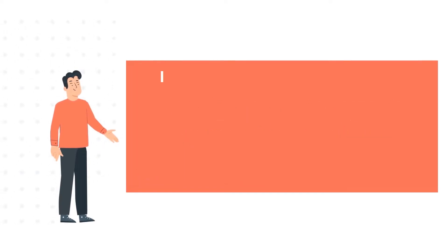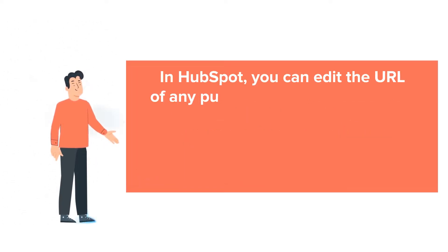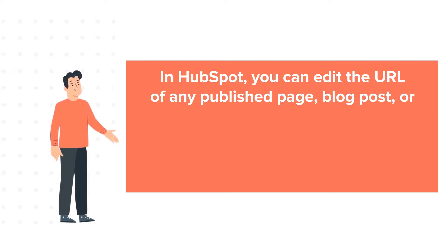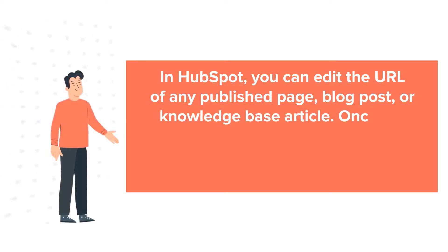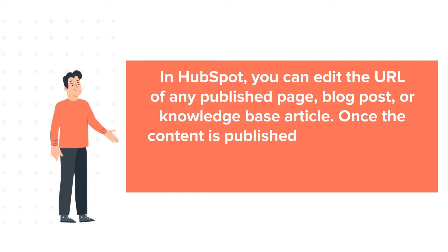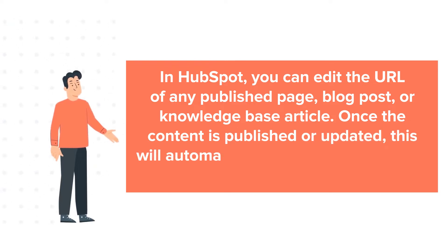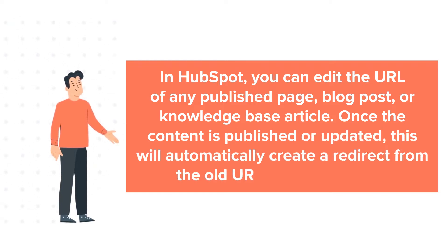In HubSpot, you can edit the URL of any published page, blog post, or knowledge base article. Once the content is published or updated, this will automatically create a redirect from the older URL to the new URL.